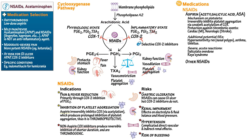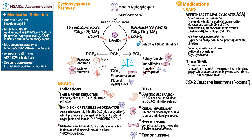For the numerous other NSAIDs, we've already addressed their typical potential side effects, so let's list their common uses: treatment of pain, arthritis, gout, dysmenorrhea, migraine, patent ductus arteriosus in premature infants, and cancer prevention. For COX-2 selective inhibitors, the major advantage is that they avoid GI ulcers, but note that they still can cause renal impairment. Also, celecoxib does not increase the risk of thrombotic events.